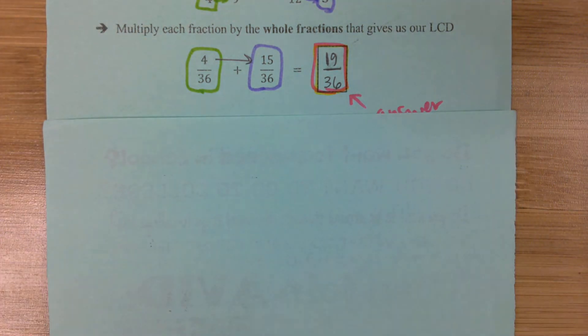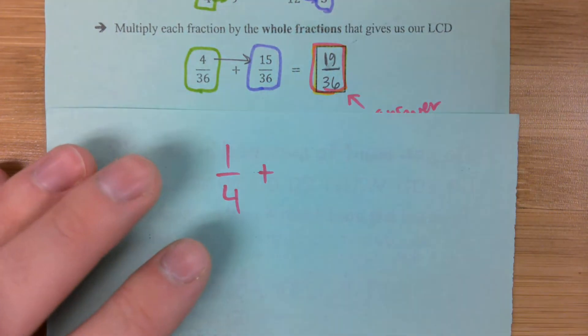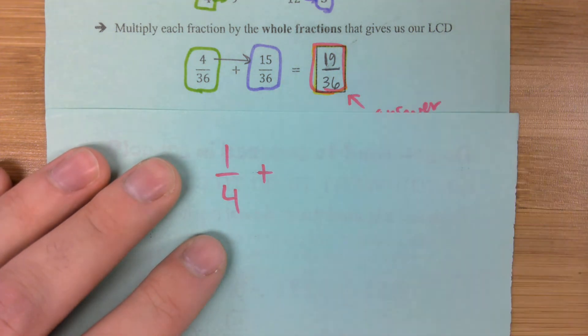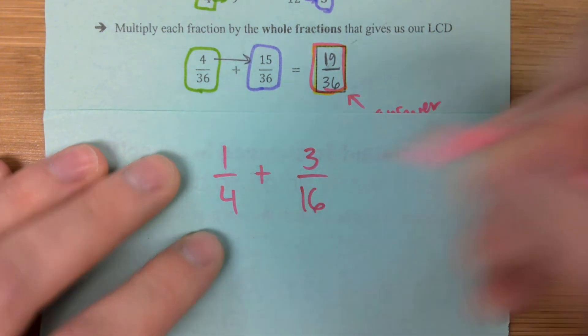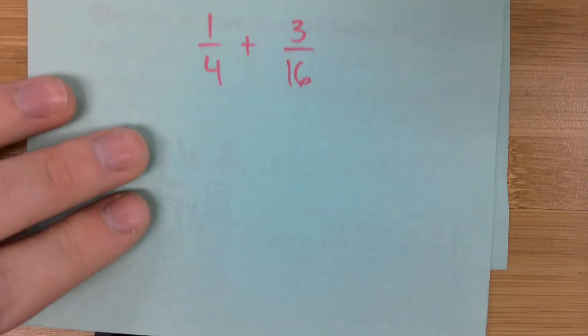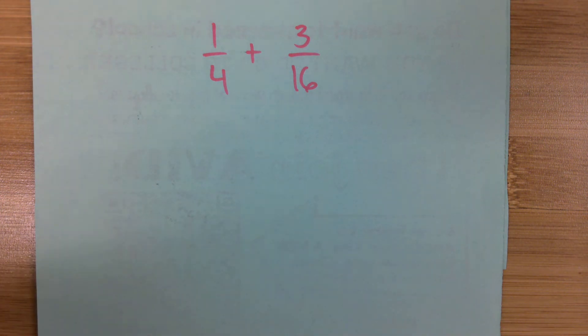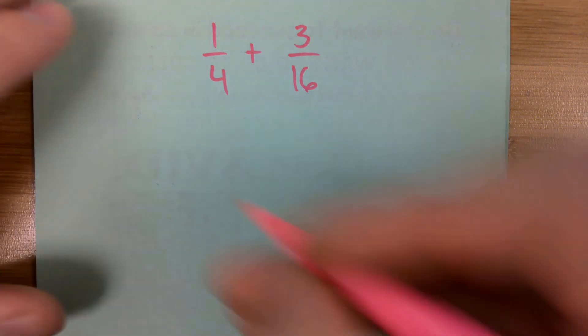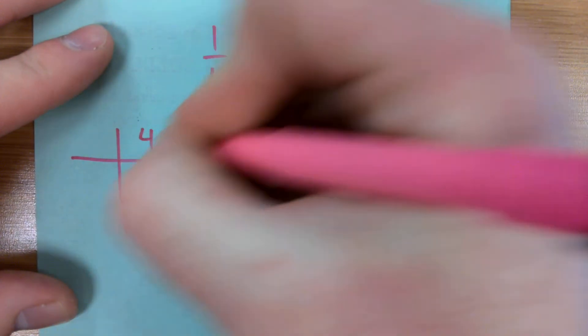Let's take a look at another example real quick. We'll go 1 over 4 plus 3 over 16. So some of you might be able to tell right away from something like this what our LCD is, right? Can anyone just decipher what our LCD is going to be just by looking at this? 16, right? But let's do our multiples table and see what happens.